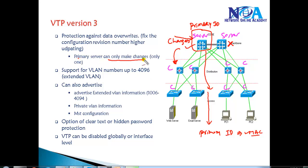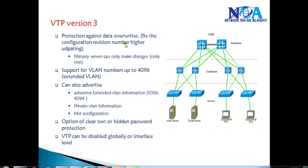In VTP version 3, only the primary server can make changes, and only one primary server is allowed. This fixes the problem of a higher configuration revision number overwriting the switches — that behavior no longer exists in version 3.